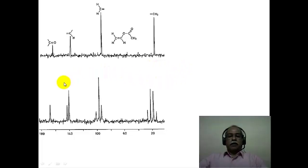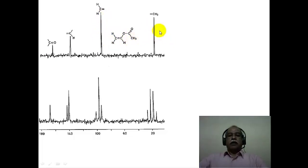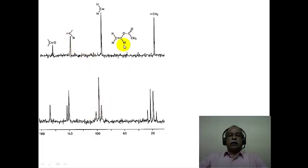The off-resonance spectrum of vinyl acetate demonstrates this. The broadband decoupled spectrum shows four signals for the four carbons. In the off-resonance spectrum, the methyl carbon appears as a quartet, the terminal alkene carbon (CH₂) appears as a highly distorted triplet, the internal alkene CH carbon appears as a doublet, and the carbonyl carbon (bearing no hydrogen) appears as a singlet in both the decoupled and off-resonance spectra.